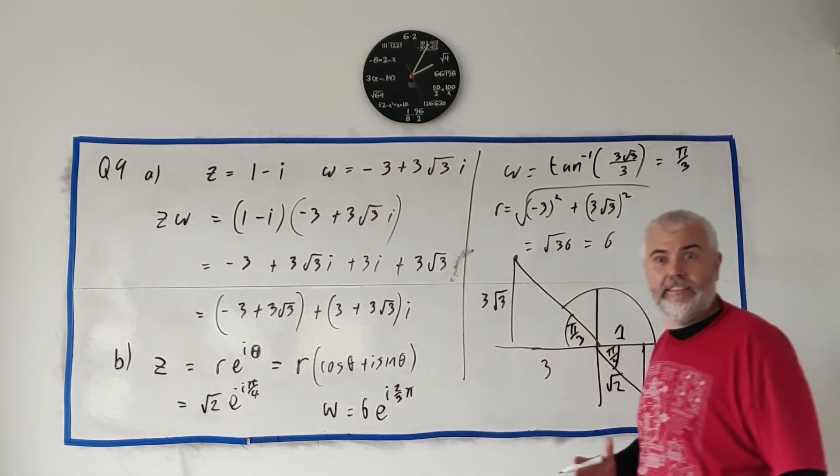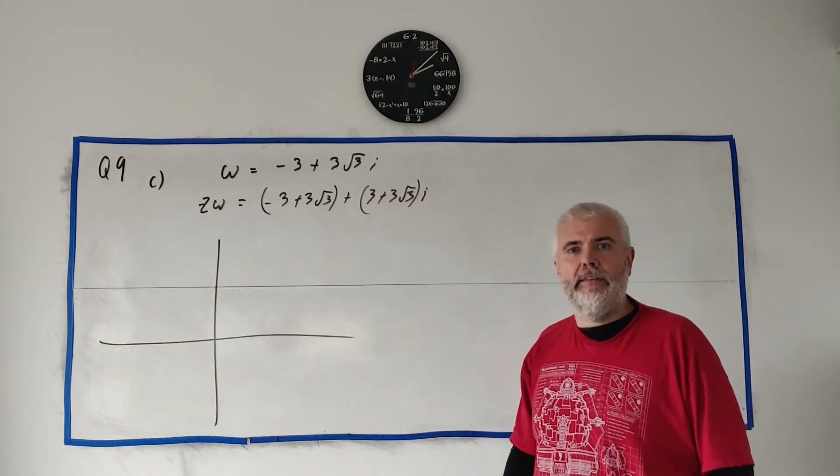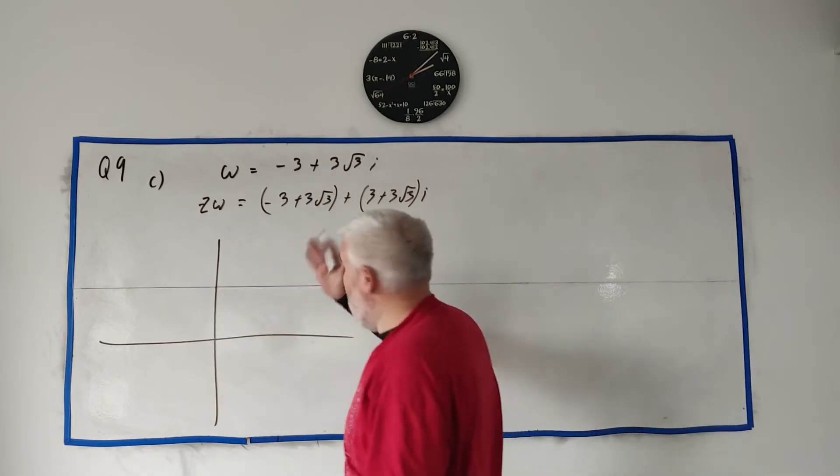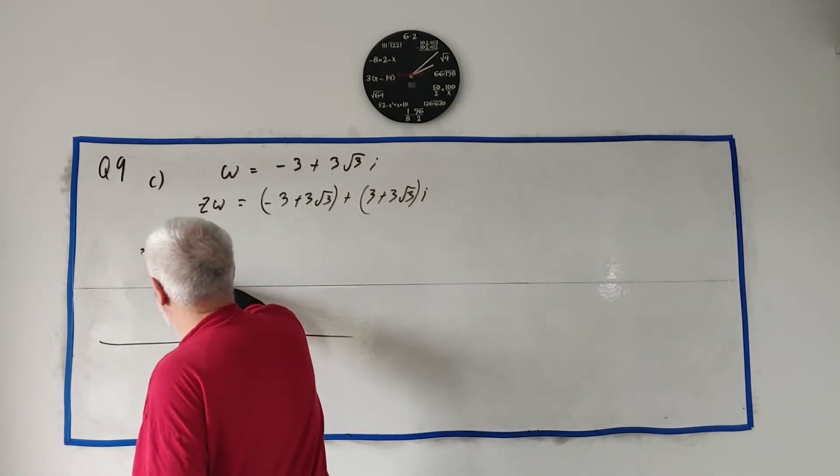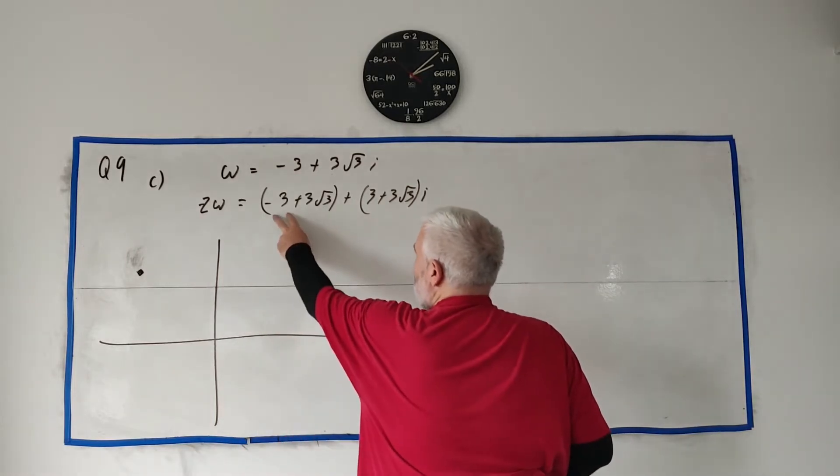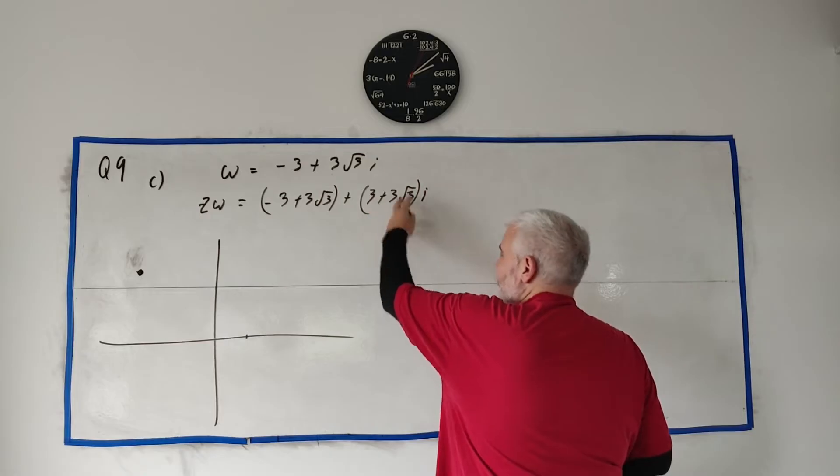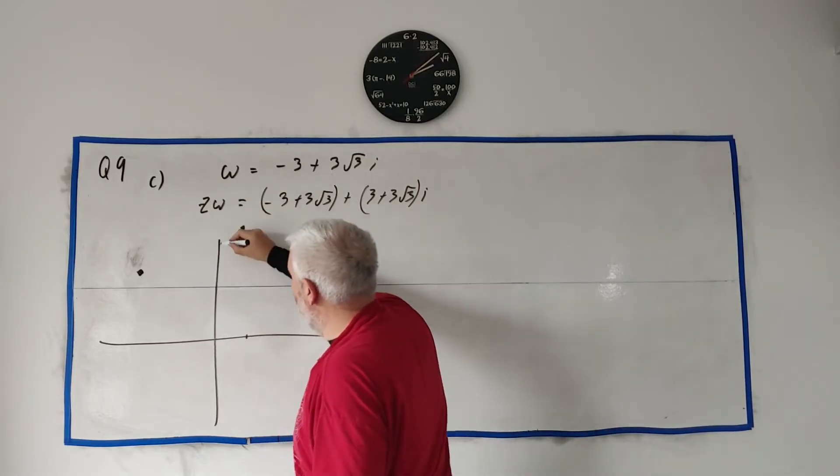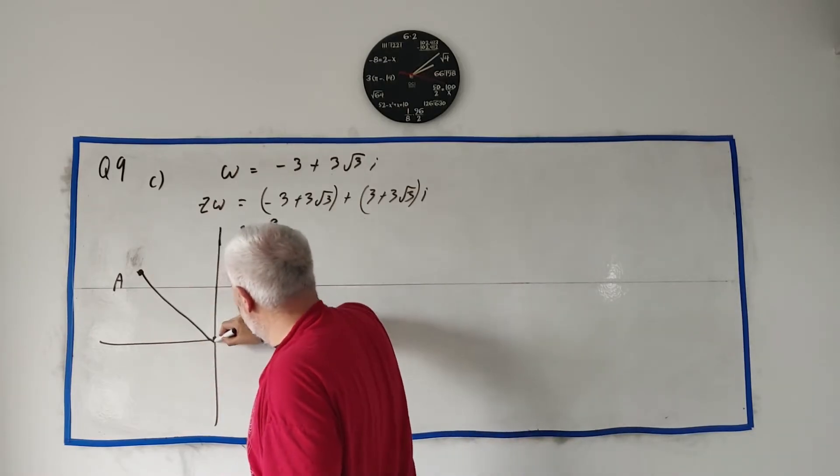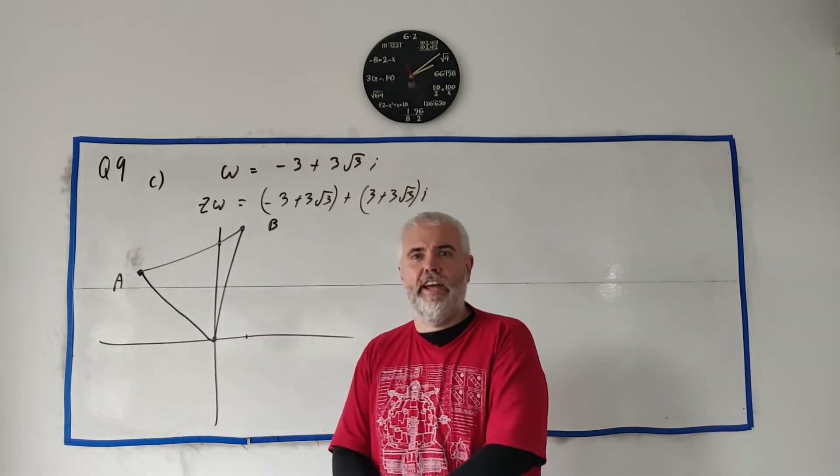In part C, they want us to put these two points, omega and zeta multiplied by omega, on an Argand diagram. So we have minus 3 and 3 square root of 3. Somewhere down here, minus 3, 4 and a half up here. And then this one here would be minus 3 plus this, somewhere over here, one and a half or so. And then 3 plus this, that's 7 and a half, somewhere quite high up here. So we get these two points, and they tell us to call these A and B. And here's 0, 0. They talk about this forming a triangle, and they ask us to prove that this triangle is right-angled isosceles.